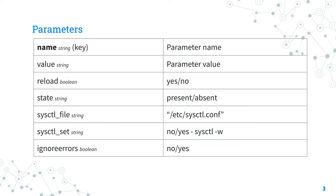The parameter 'sysctl_file' allows you to configure a parameter permanently so that it survives after reboot. This might be very useful, and it defaults to no.